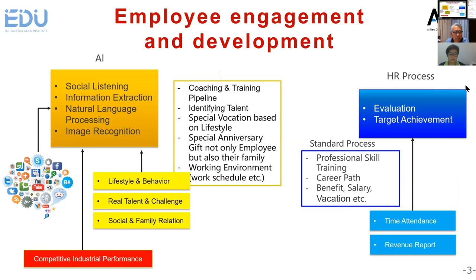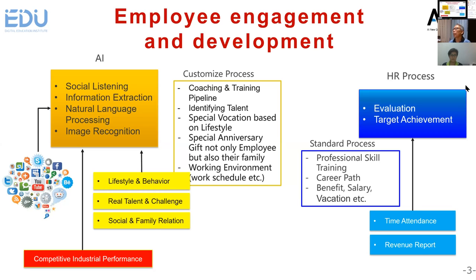The second HR function we selected is Employee Engagement and Development. As we know, in the traditional HR process, the input comes from time attendance and revenue reports. Then HR will evaluate and do target achievement. It will provide the output as professional skill training, career path, benefits, salary, vacation, etc. However, this process is a linear process — it is not adaptive to each staff or each person.